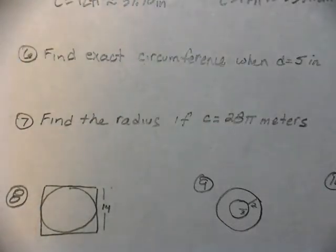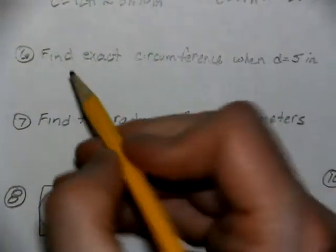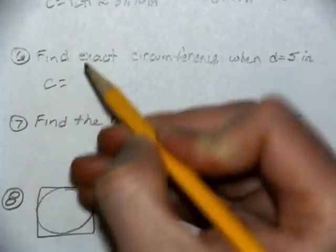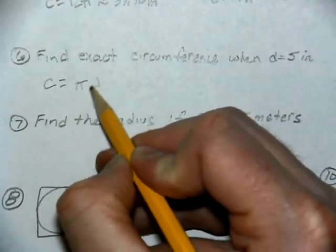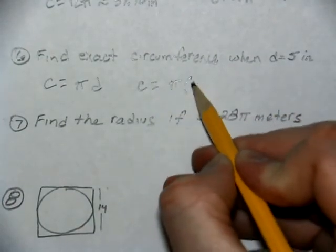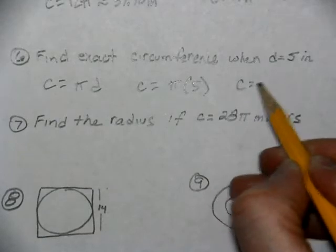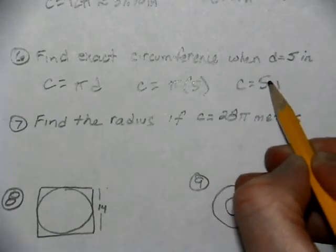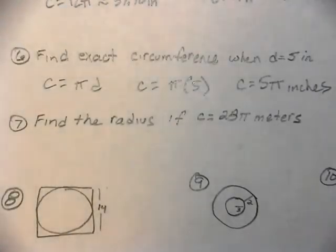For number six, we're not given a picture but we're going to find the exact circumference if the diameter is 5. The circumference is πd, so our circumference is π times 5. Our exact answer is 5π inches.